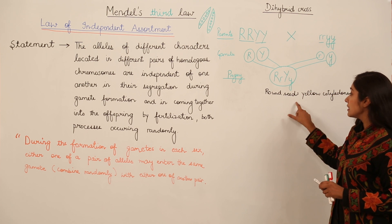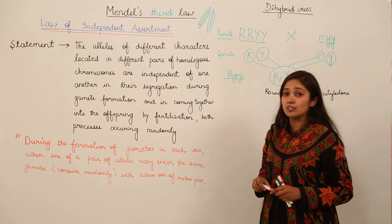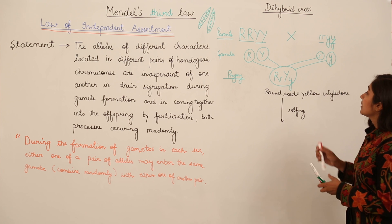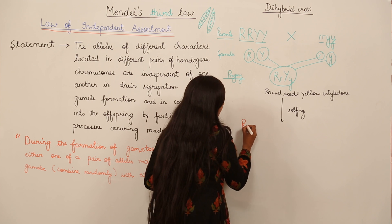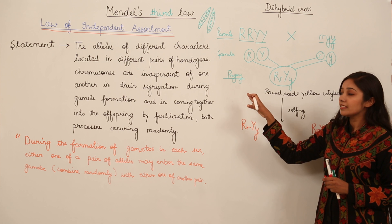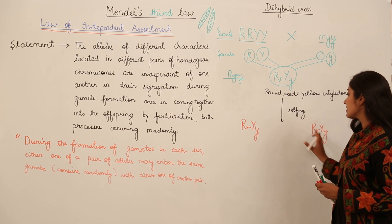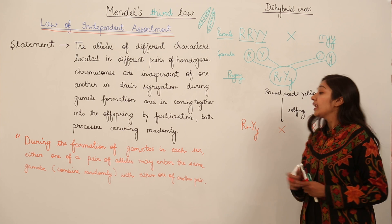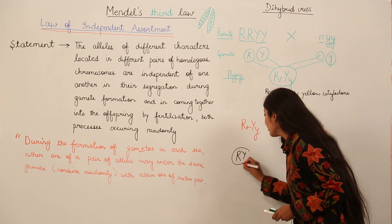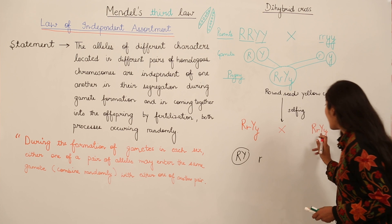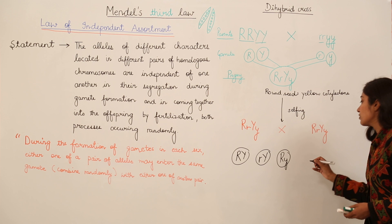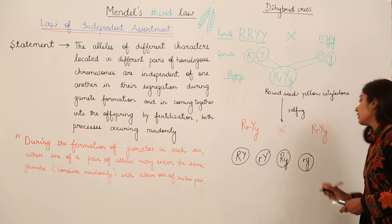For the second generation, Mendel did selfing — meaning the F1 progeny was crossed with itself. Now we will get different combinations. The four possible combinations are: capital R capital Y, small r capital Y, capital R small y, and small r small y. These are the four possible outcomes and traits that we can observe.